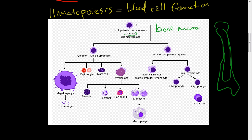Inside the bone marrow there is a multipotential hematopoietic stem cell. These immune cell stem cells can replenish themselves — they can multiply and divide to create more stem cells. But then, through proper signals, they start differentiating and turning into different cell lines.